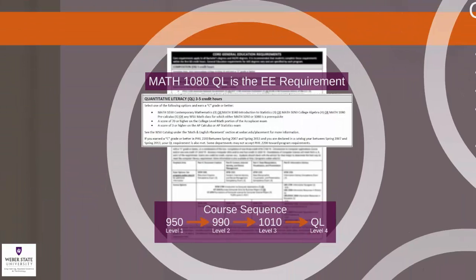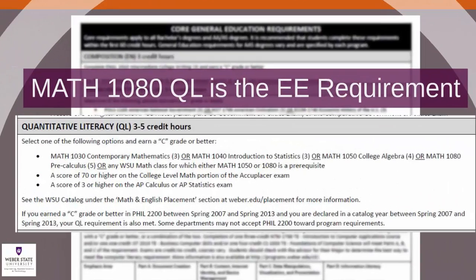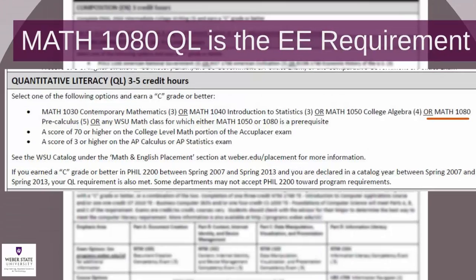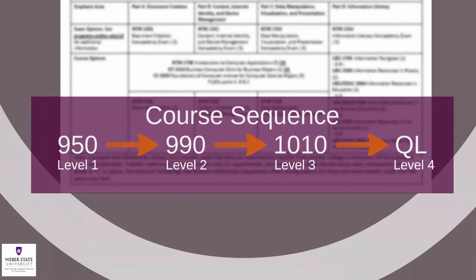The third requirement under the core section for General Education is Quantitative Literacy. Please note that as an Electrical Engineering student, your major requires Math 1080. This course will fulfill your quantitative literacy requirement. As with English, you may need to take prerequisite courses before taking Math 1080, depending on where you were placed on the Math Mastery exam or ACT in the past two years. The Electrical Engineering math sequence is Math 950, Math 990, Math 1010, and Math 1080.